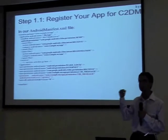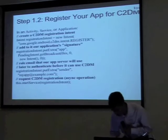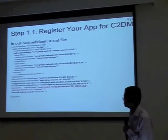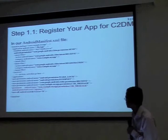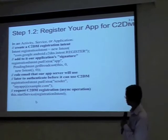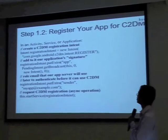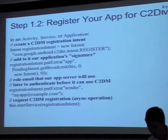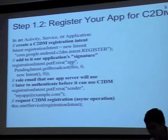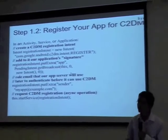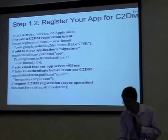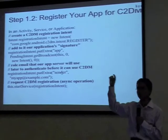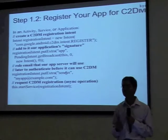After specifying the permissions — which need to be set as signature permissions rather than user permissions — you need to register your app. You create a new registration intent, identifying your app using a name so that whenever it gets the registration intent it is identified by that string. You need to set the sender account — the whitelisted email address from which you are going to receive the notifications — and then you fire up the registration.